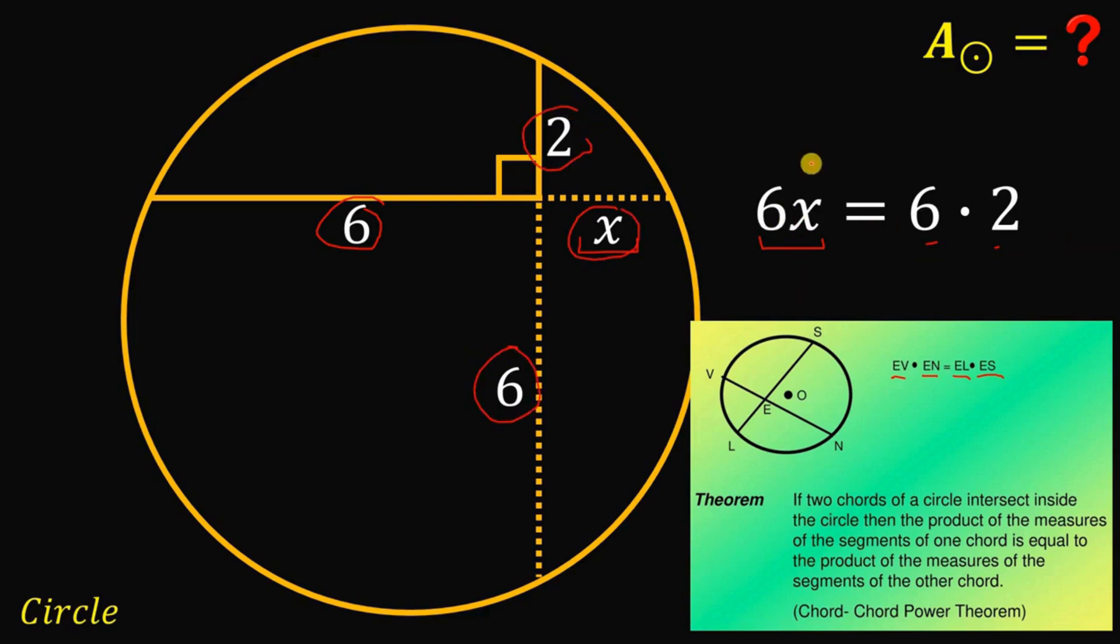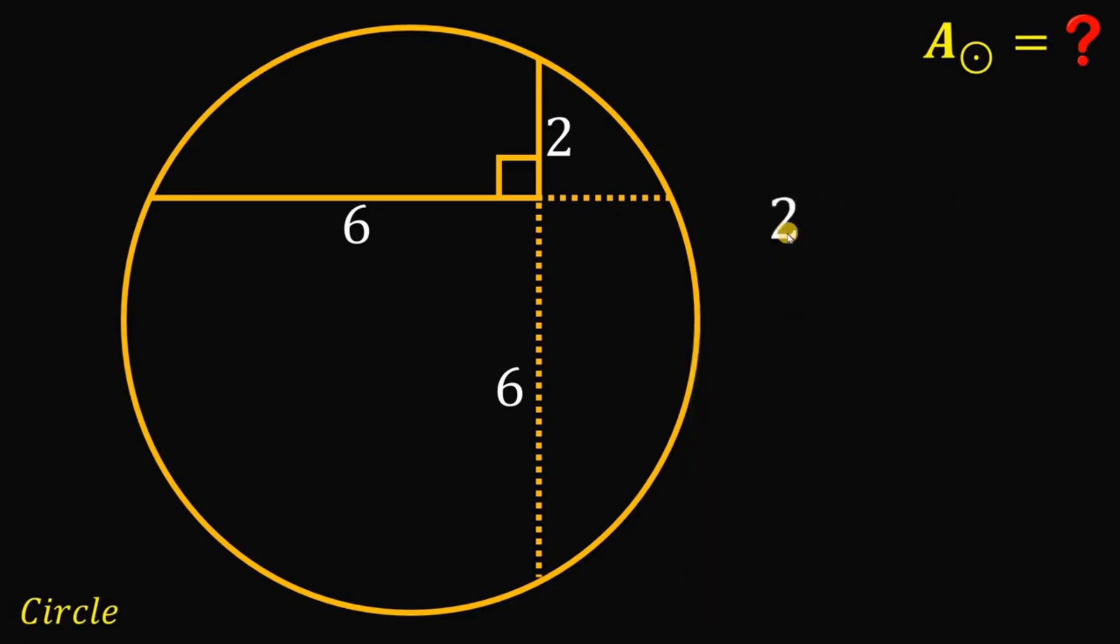Now, we can divide both sides by 6. So, we can cancel out 6 right over here. And we can definitely say that x equals 2. Okay. So, we can now finally say that x must be equal to 2.